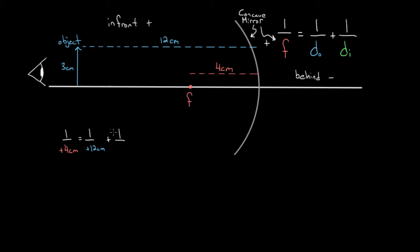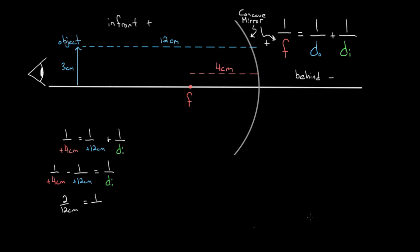We add to that one over the image distance, which we don't know yet — it's going to be a surprise. We solve for image distance by subtracting one over 12 from both sides, giving us one over four centimeters minus one over 12 centimeters equals one over the image distance. One fourth is the same as 3/12, so 3/12 minus 1/12 is 2/12, which is 1/6. So one over the image distance equals 1/6, and flipping both sides gives us an image distance of six centimeters.